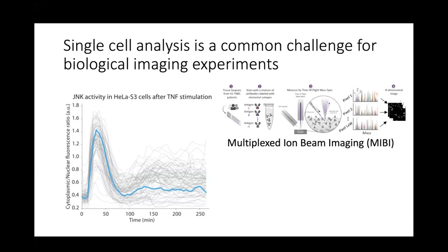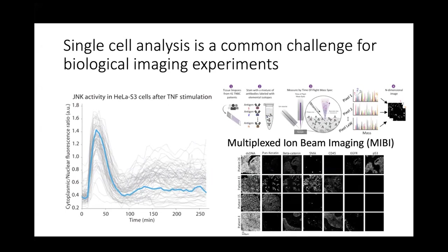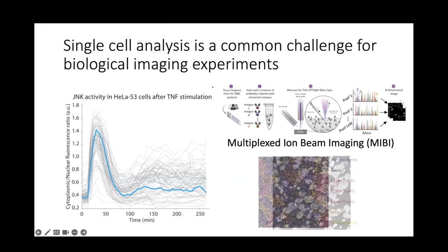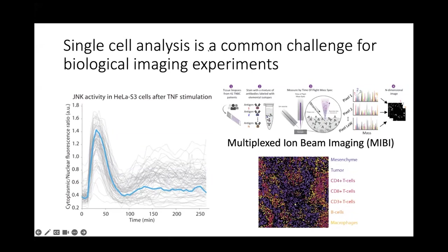Single cell analysis is also a challenge for tissue imaging experiments. New experimental platforms can measure the location and abundance of dozens of different proteins or thousands of different RNA species simultaneously. These methods produce n-color images where n is between a dozen and a thousand, and each color corresponds to some biologically meaningful variable. As an example, data from Michelangelo and Liat-Karen published in Cell profiled the tumor immune microenvironment in triple negative breast cancer patients — producing rich data but making analysis challenging. One of the first steps is identifying which pixels belong to which cells.